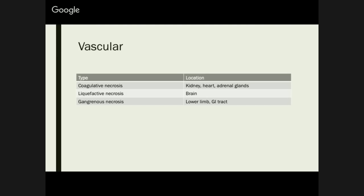These are the different types of necrosis secondary to vascular issues. You have coagulative necrosis for your kidneys, heart, and adrenals. Liquefactive necrosis for your brain — that's fairly important to remember because it's pretty different to the rest. Gangrenous necrosis is fairly easy: think about the GI tract or lower limbs — when they lose blood supply, the tissue becomes really, really dark.